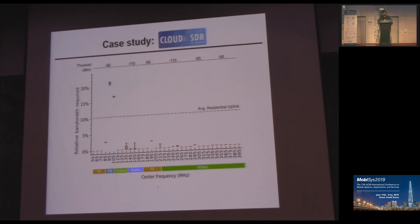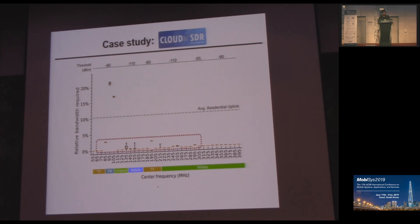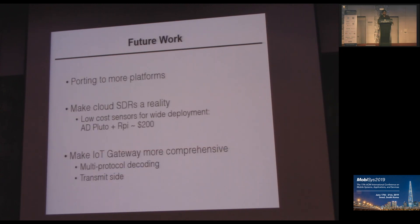The next application is cloud SDR. We capture the spectrum from 50 MHz to 400 MHz, divide it into chunks of 10 MHz, and check if we can backhaul the signals in these bands using residential backhaul. The Y-axis represents the percentage of bandwidth used relative to existing SDRs. As you can see, most of them are below the residential uplink. The FM band takes a little more than the average residential uplink because it has continuous transmissions, but even then it is only 20% of a normal software-defined radio's bandwidth usage. Future work includes porting this platform to more SDR platforms, making cloud SDRs a reality, and making the IoT gateway use case more comprehensive with multiple protocol decoding and a transmit side.